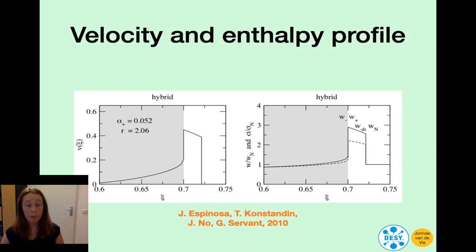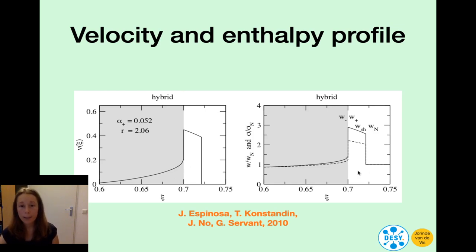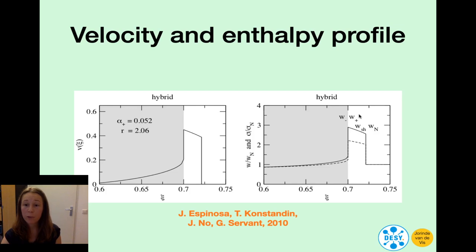Here we have an example of a solution of the hydrodynamic equations. On the left we have the velocity profile — xi is the coordinate perpendicular to the bubble wall and v is the velocity profile of the plasma. It's a hybrid, so this here is the position of the bubble wall, with a shock in front and a rarefaction wave behind. On the right we get the enthalpy and entropy profiles. And knowing the equation of state, one can convert the enthalpy profile into a temperature profile as well.